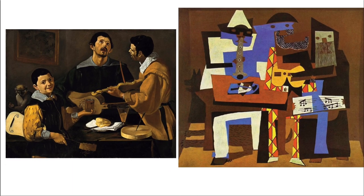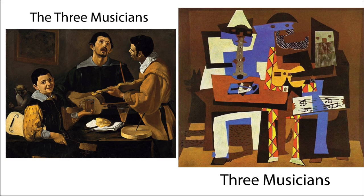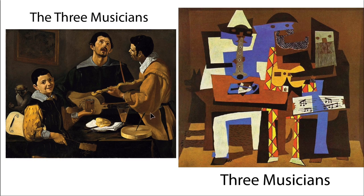We have two very similar paintings — let's look at them and compare and contrast them. The first similarity is the titles: 'Three Musicians' by Diego Velázquez and 'Three Musicians' by Pablo Picasso. This side is Diego Velázquez, this side is Pablo Picasso. This one was made in 1618, this one in 1921 — almost 300 years between them, which is a pretty big gap.